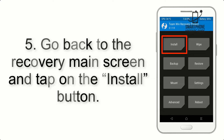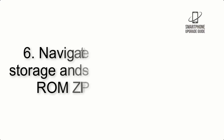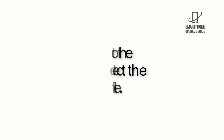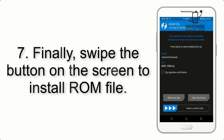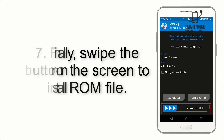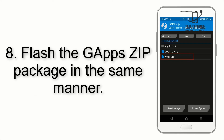Step 5: Go back to the recovery main screen and tap on the Install button. Step 6: Navigate to the storage and select the ROM zip file. Step 7: Finally, swipe the button on the screen to install the ROM file.